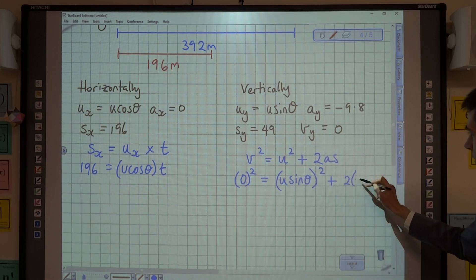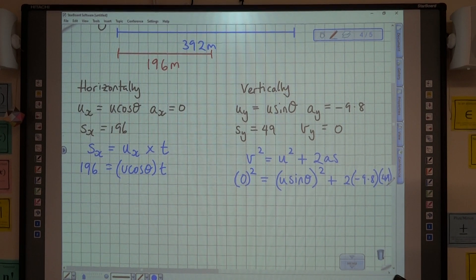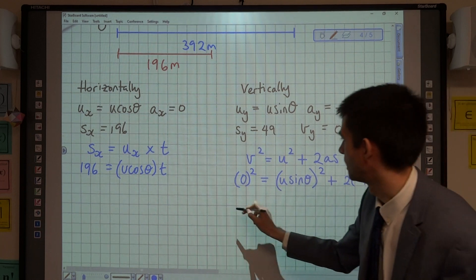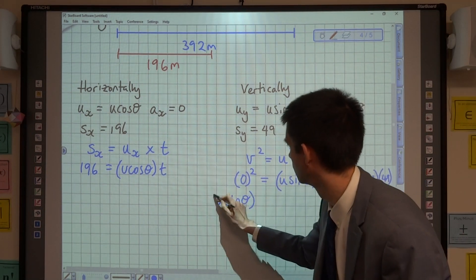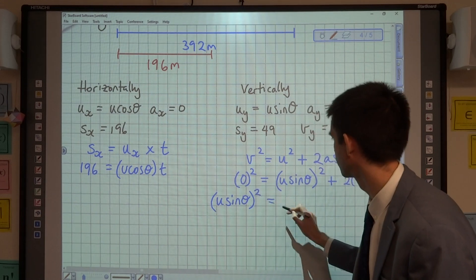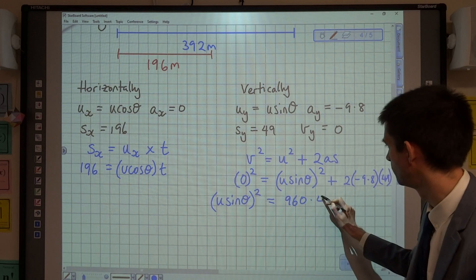So we can calculate that to get that u sin theta squared is equal to 960.4.